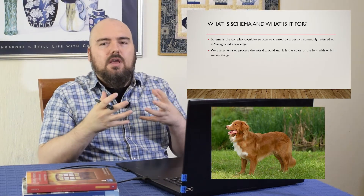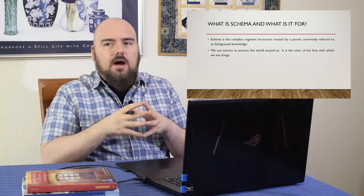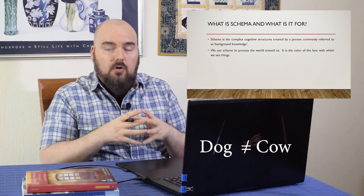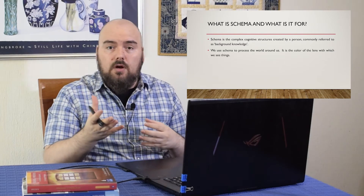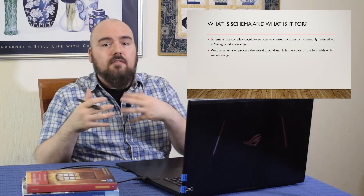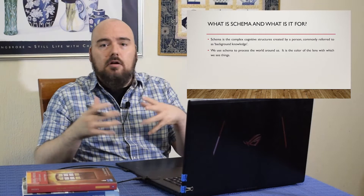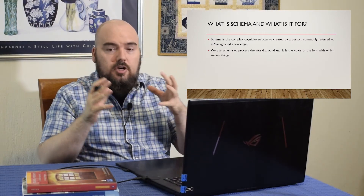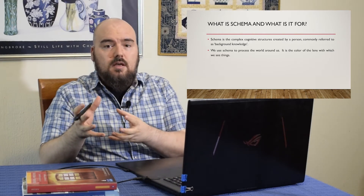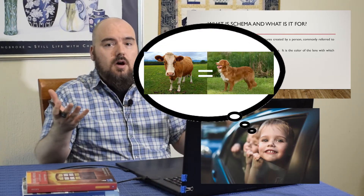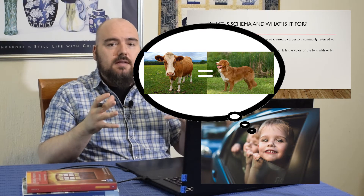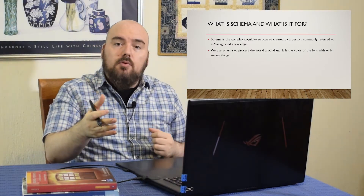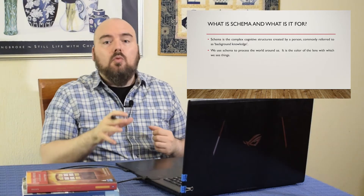You might think he's wrong — how can he confuse a dog and a cow? However, he'd never seen a cow before. He saw this animal: it had four legs, a tail, a head. So for him, the closest thing he could interpret that animal as was a dog. He used this lens of his previous experiences to be able to interpret the world around him. That is schema.